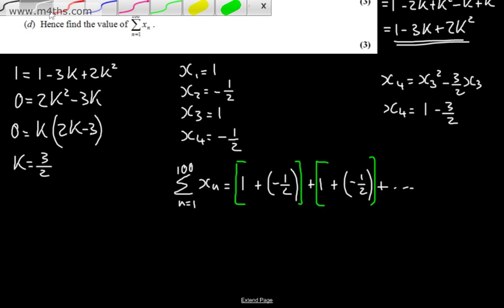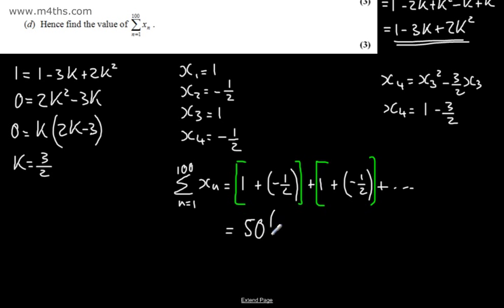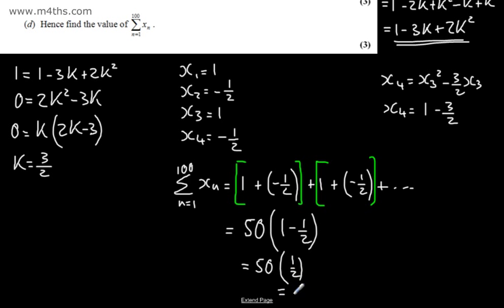So the sum is 50 × (1 − 1/2) = 50 × 1/2 = 25. That's the sum from n = 1 to 100 of x_n.